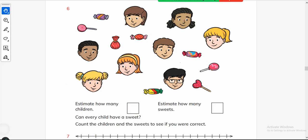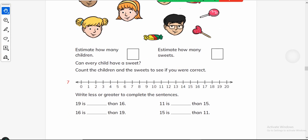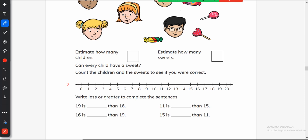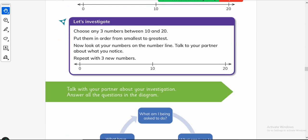Write less or greater to complete the sentence. 19 is greater than 16, we will write greater. 11 is less than 15. 15 is greater than 11.